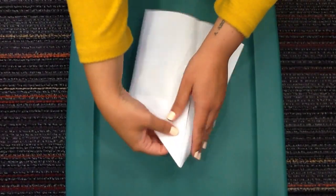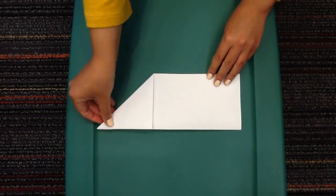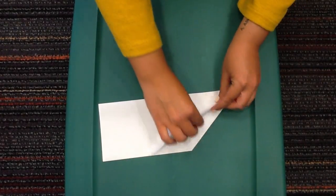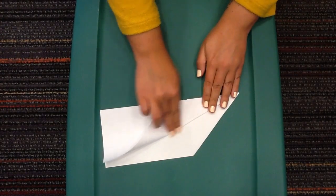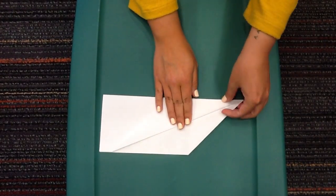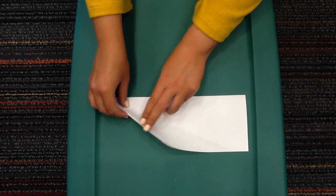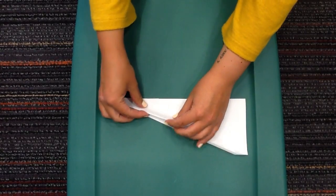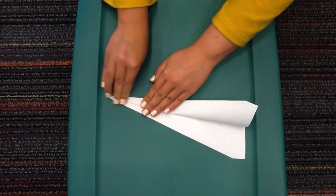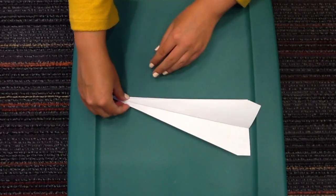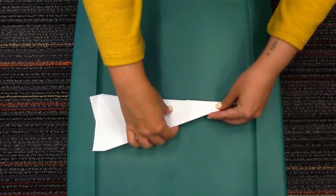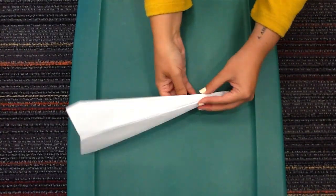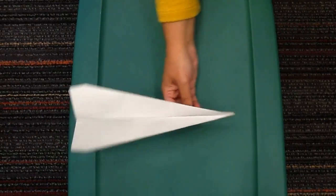Fold it back in the center again. It should look like this. Fold it back in the middle. Now fold one side of the wing down, repeat this on the other side as well. Once done, your paper airplane should look like this.